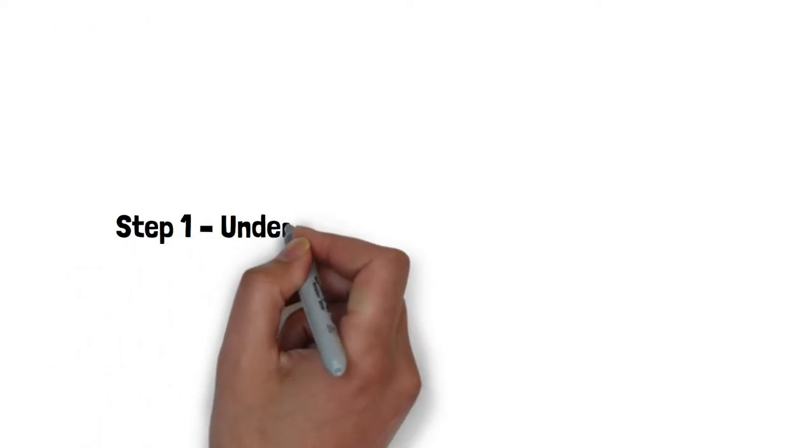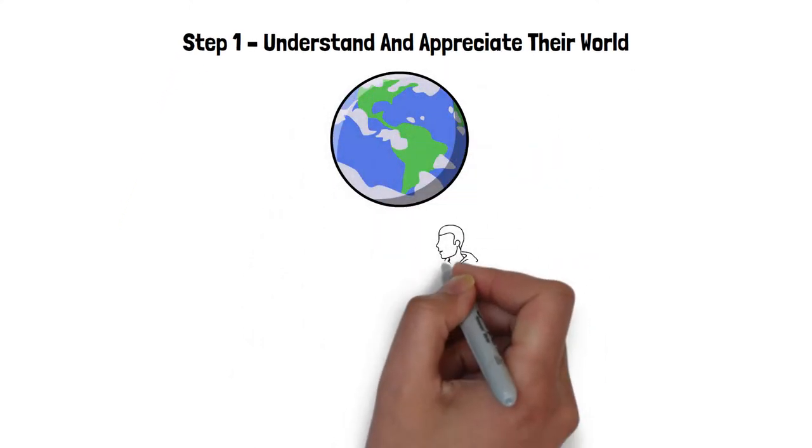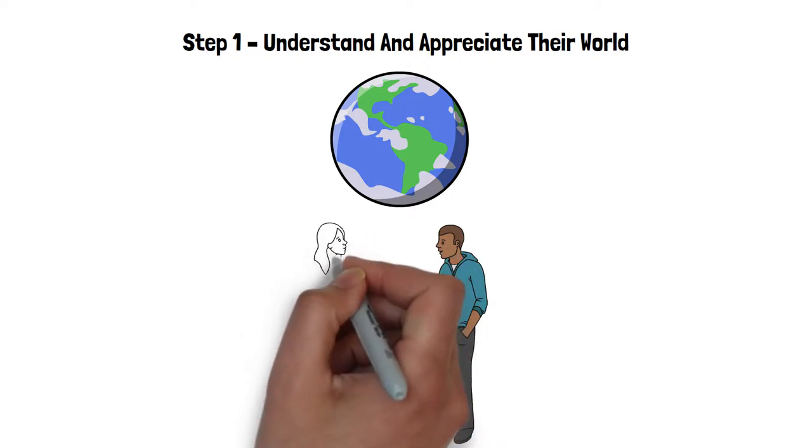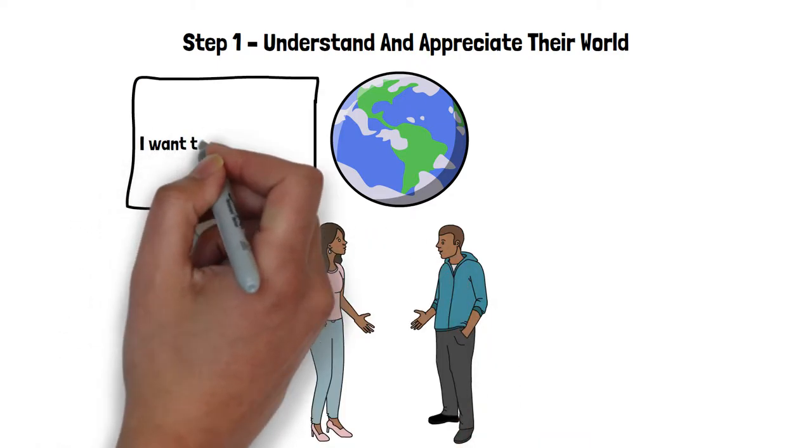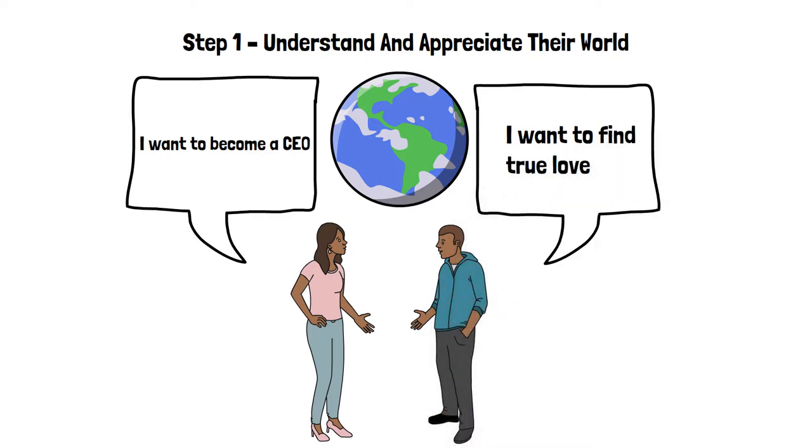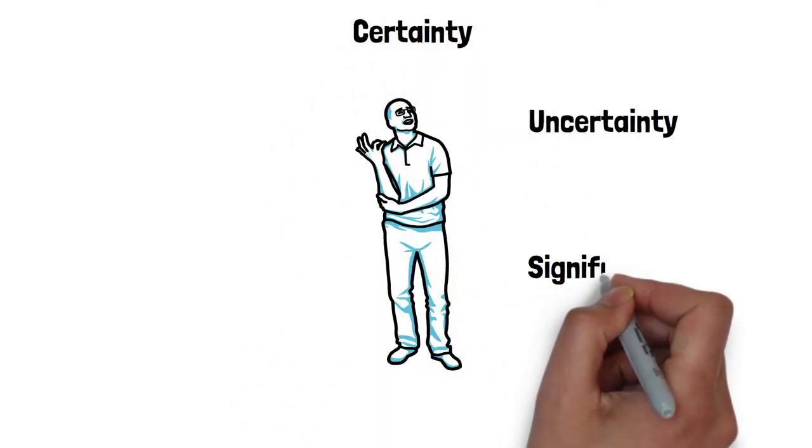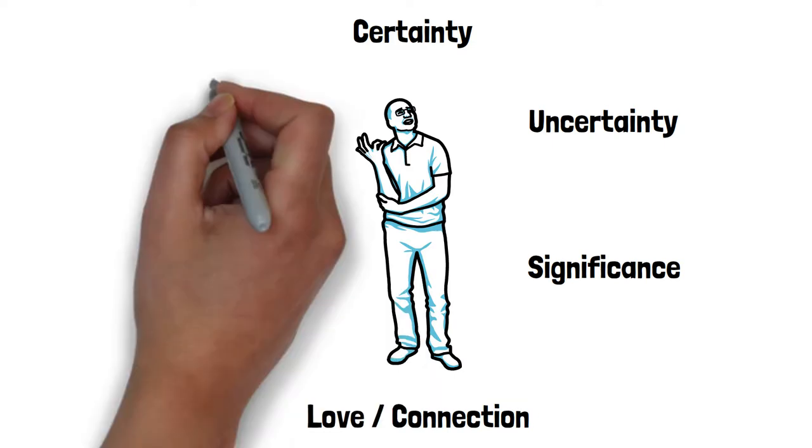Step one. Understand and appreciate their world. This first step to creating lasting change is the most important and most critical for change to occur in yours or anyone's life. To influence yourself or anybody else, you must first know what influences them and what human needs they or you are trying to fulfill. Each of us try to fill all the human needs. However, there are two preferred higher than all others.